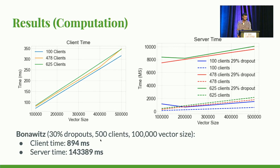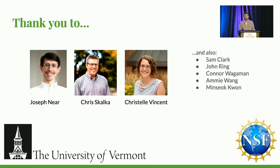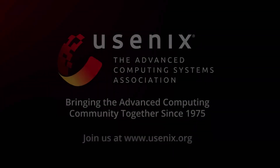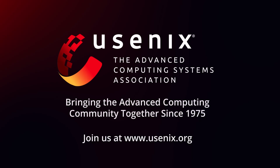For 30% dropouts, 500 clients, and vectors of 100,000 elements, the previous state-of-the-art has about a second of client runtime and 143 seconds of server time. I think that concludes what I have to say on the protocol, and I'm happy to take questions now. Thank you.